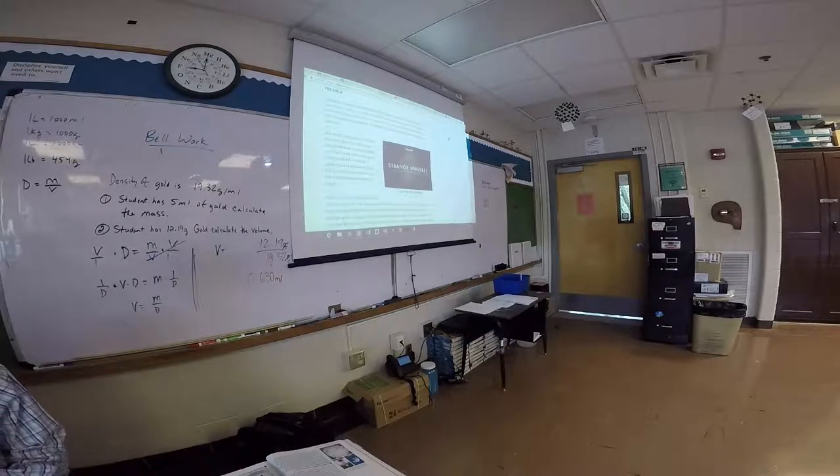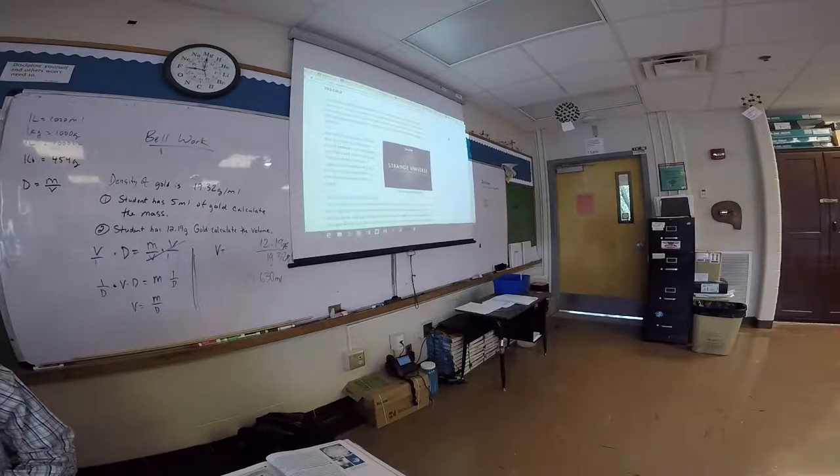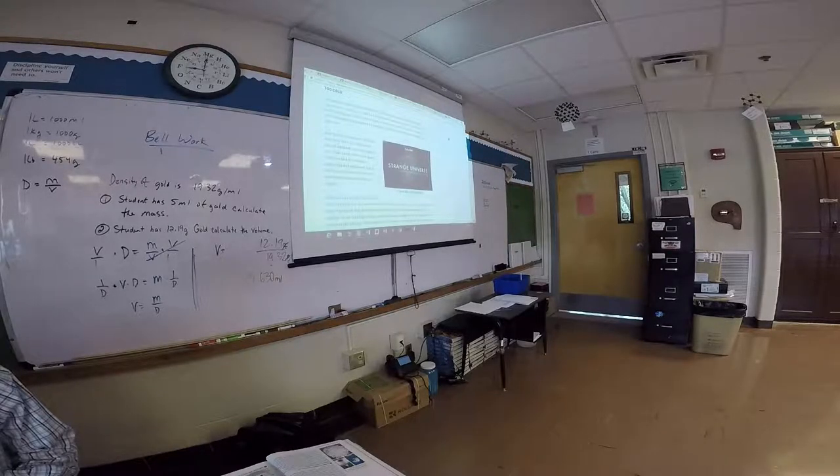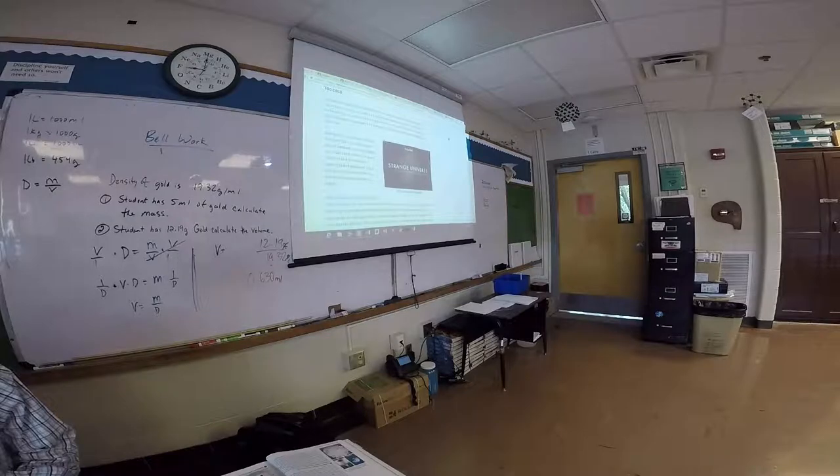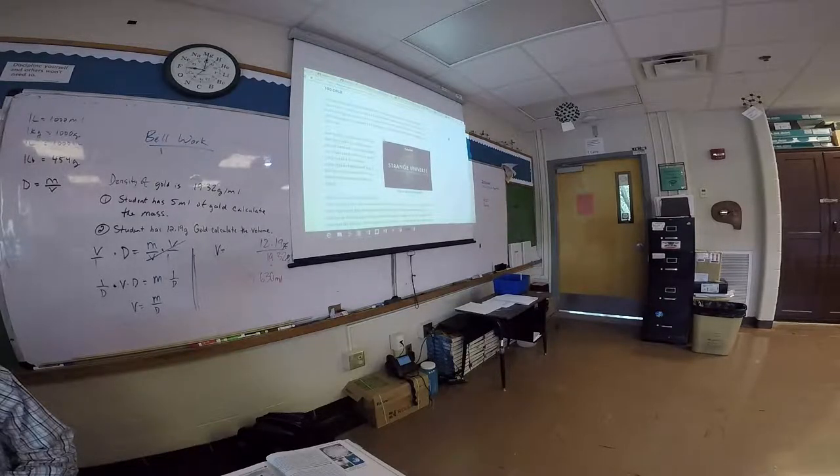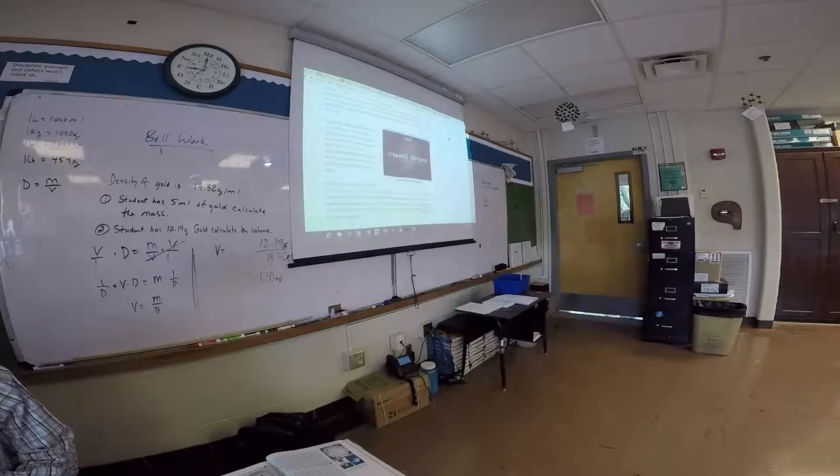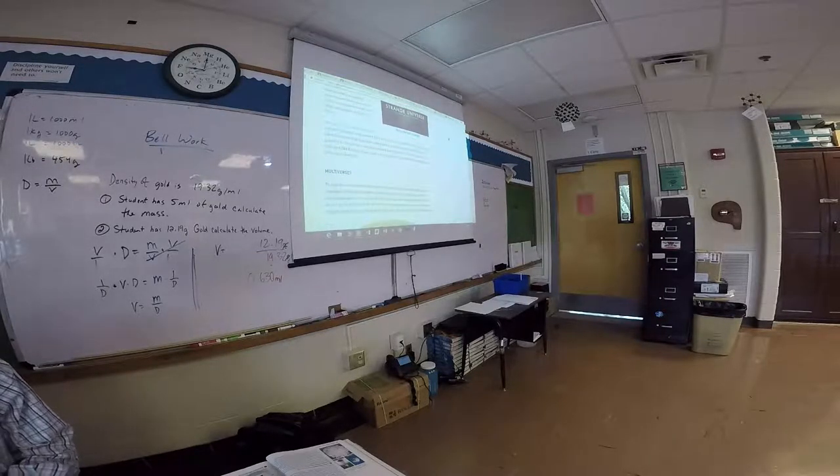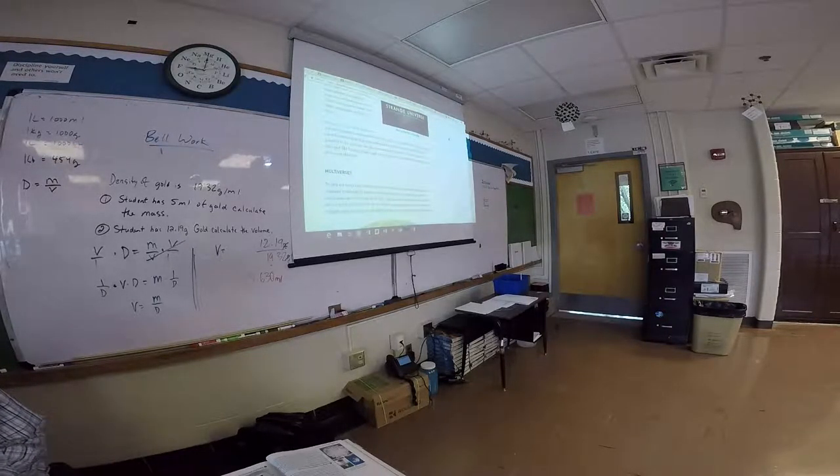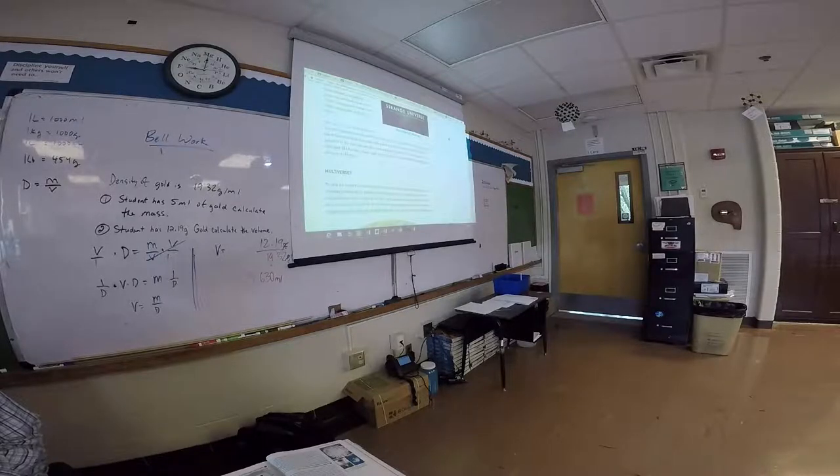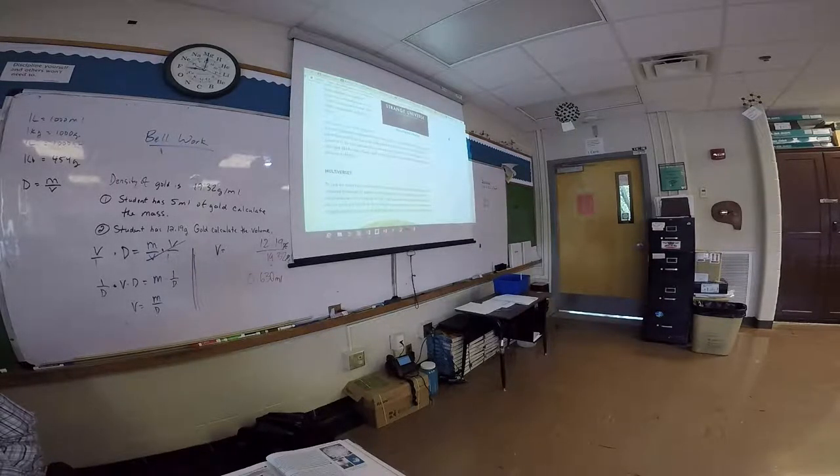They dubbed it a massive supervoid and estimated that it had 10,000 galaxies fewer than other comparable sections of space. But now, in a recently published survey of galaxies, astronomers from the Royal Astronomical Society say they have discovered that this supervoid could not exist. They now believe that the galaxies in the cold spot are just clustered around smaller voids that populate the cold spot like bubbles. These small voids, however, cannot explain the temperature difference observed.